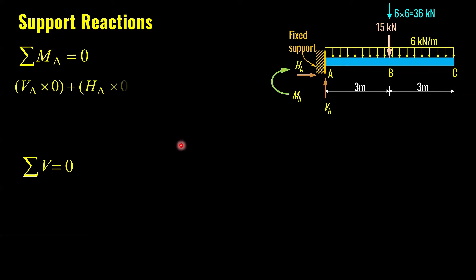For finding out VA and MA, I will find out summation of moment at A equal to zero. Here VA and HA, they are not creating any moment because they are just lying at the same point where I'm finding moment. Remember, moment is equal to force times perpendicular distance. If there is no perpendicular distance, then it will not generate any moment. And additionally, here we have resisting moment MA.